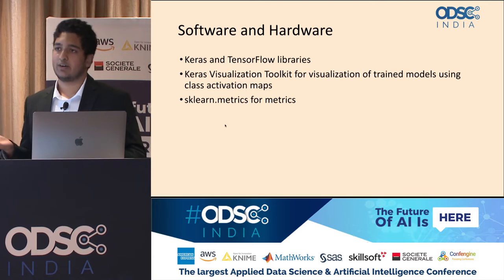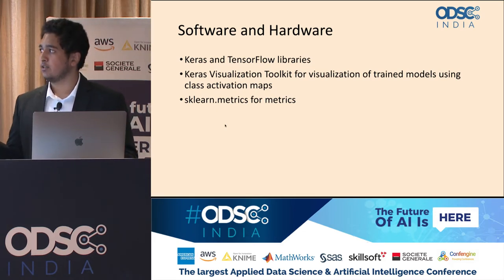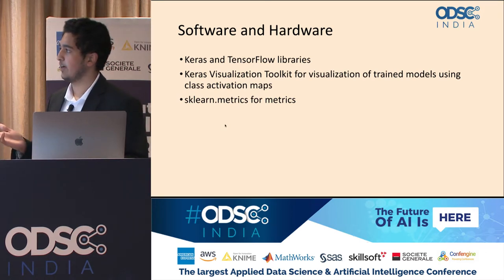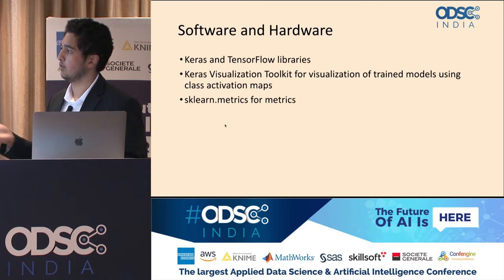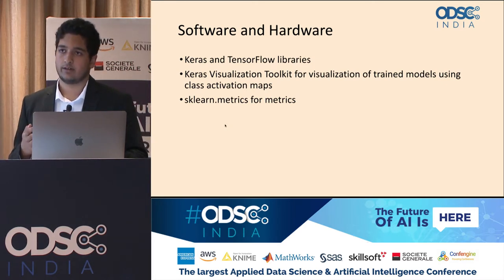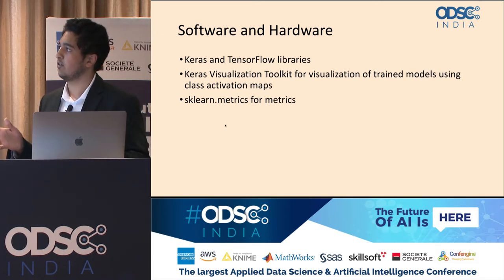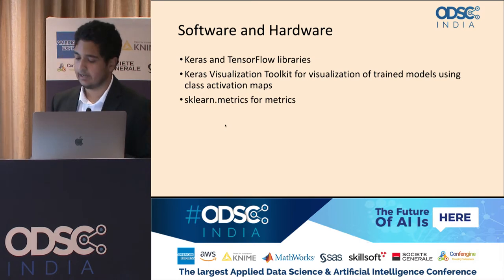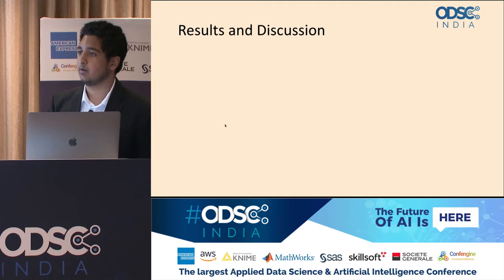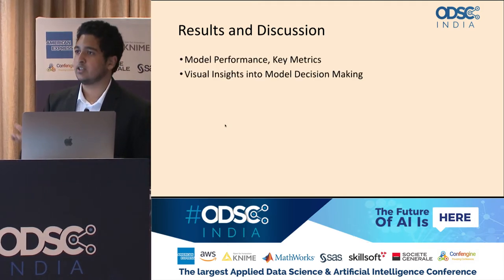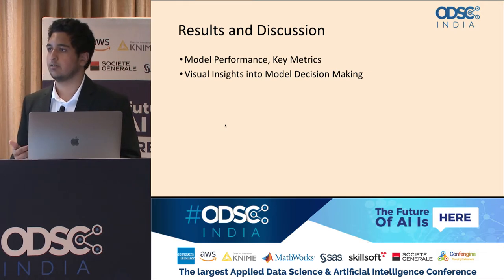The software used includes Keras and TensorFlow libraries in Python. A library called the Keras Visualization Toolkit was used for the GradCAM algorithm, and sklearn.metrics was used to get the metrics for all models. The hardware was just a CPU on a Mac. The AlexNet model was chosen over more complicated architectures like DenseNet or ResNet due to limited resources. The Adam optimizer was chosen based on a literature review showing it had the best results compared to other optimizers.